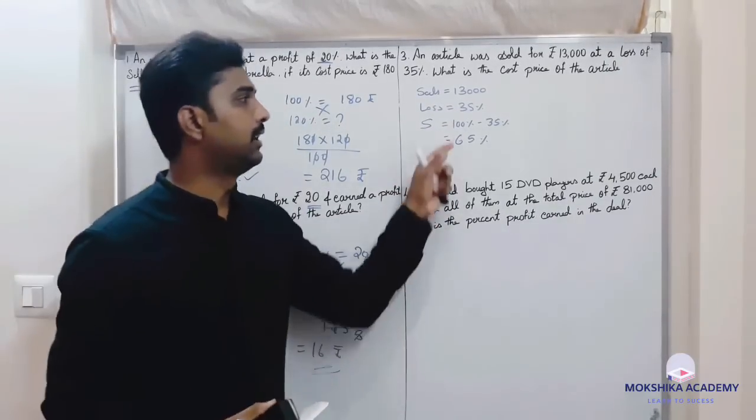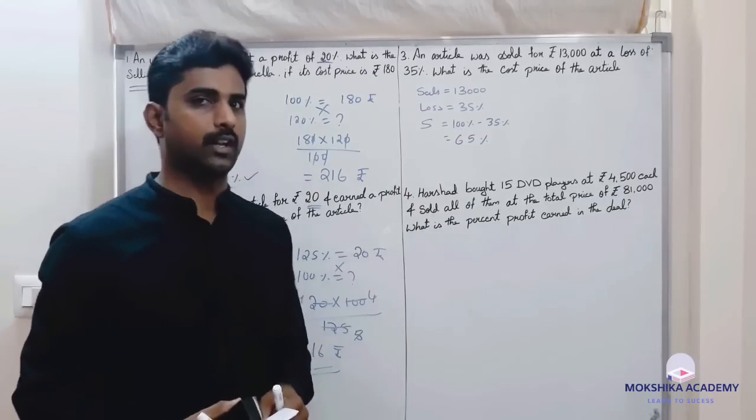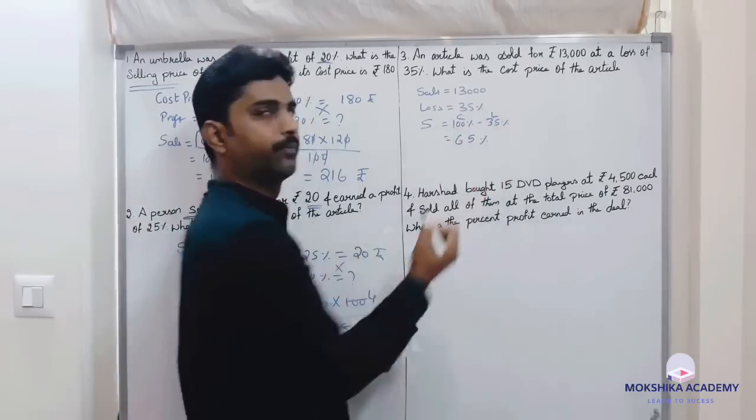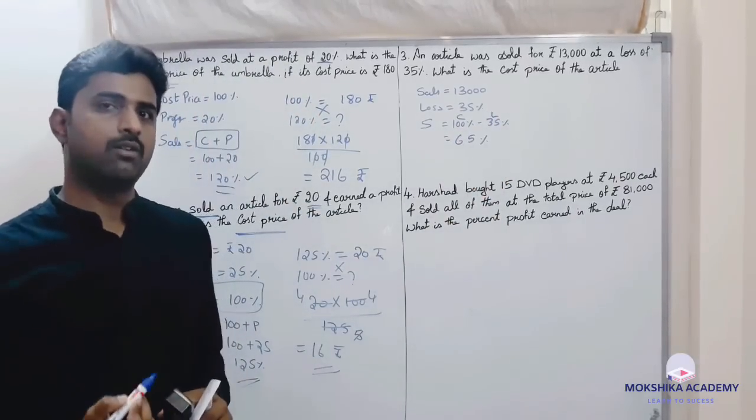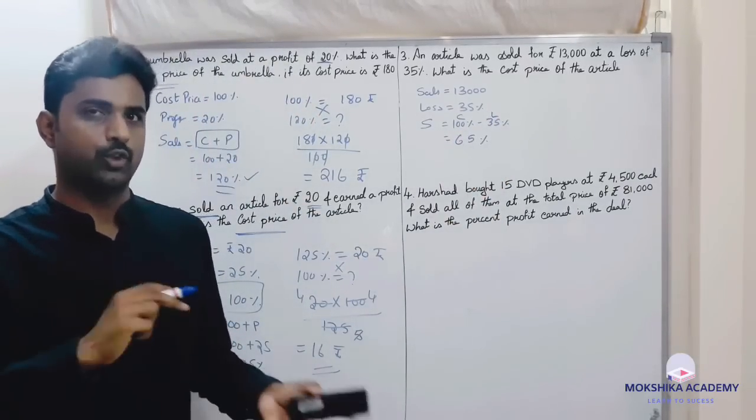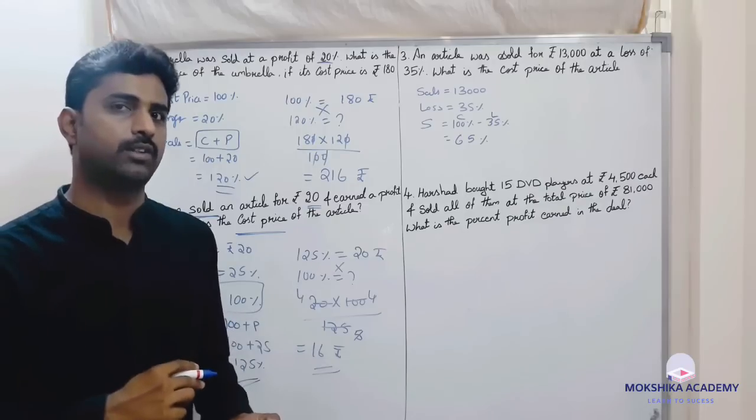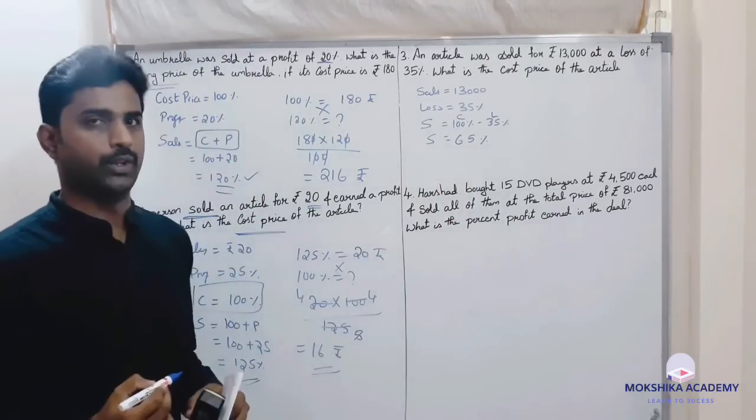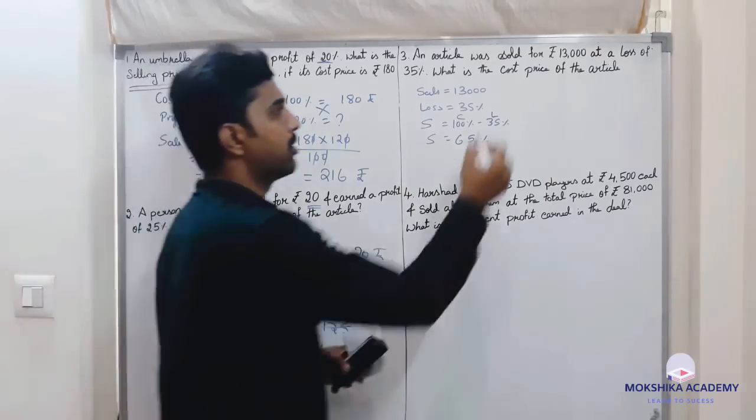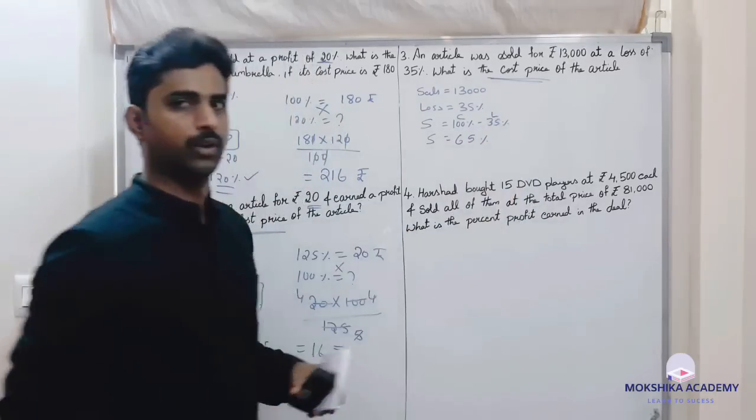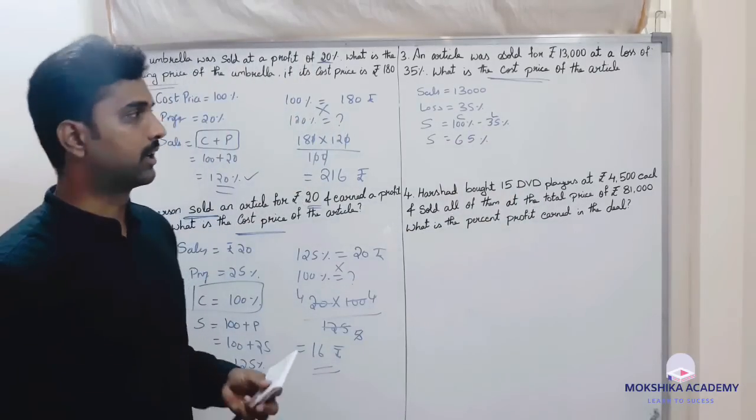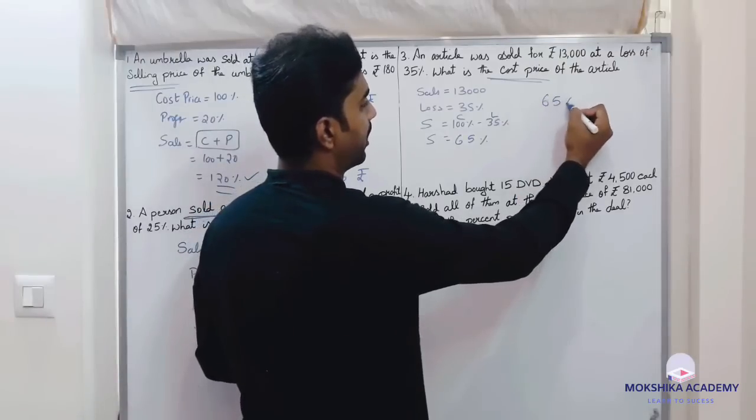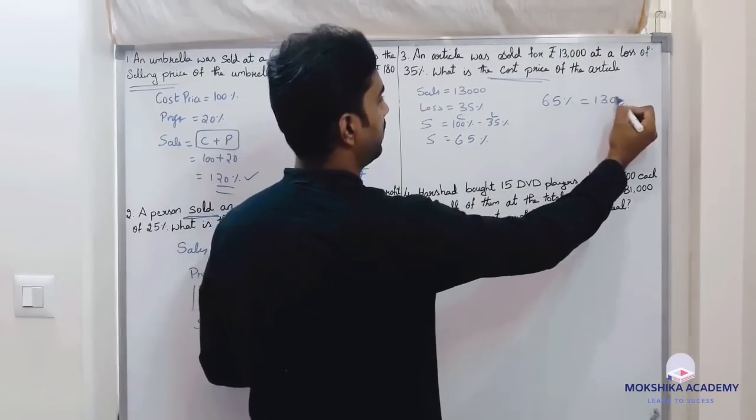Sales. Cost minus loss. Cost plus profit, so cost minus loss. Sales is 65 percent. Now you know that 65 percent is equal to 13,000.